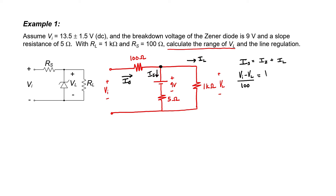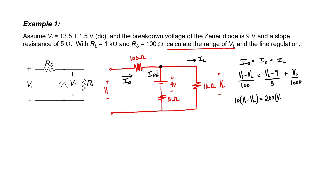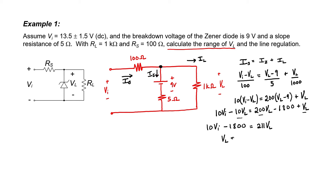For the Zener diode, I can just apply Ohm's law across the 5 ohm resistor. Finally, for the load current, I can again just use Ohm's law — current is voltage divided by resistance. Let's multiply every term in this equation by a thousand in order to get rid of the fractions. Let's write this out term by term, concentrate all of the V sub L terms to the right, and put everything else on the left. Let's swap sides and divide everything by 211. I have my equation that relates the load voltage to the line voltage.